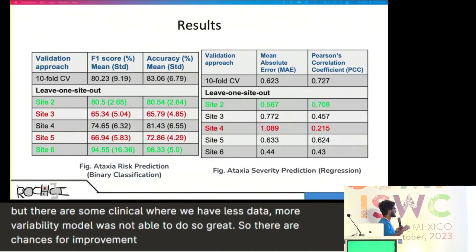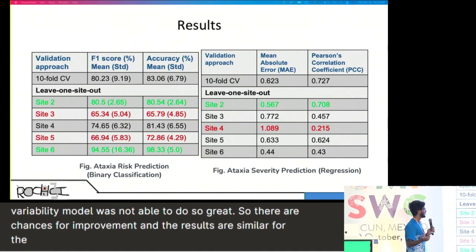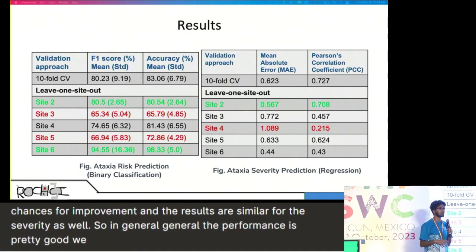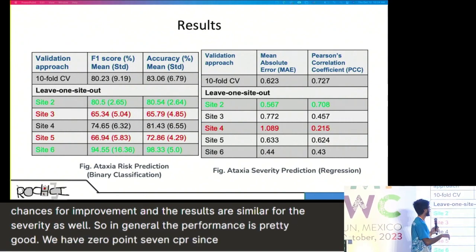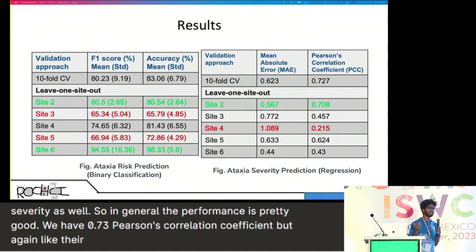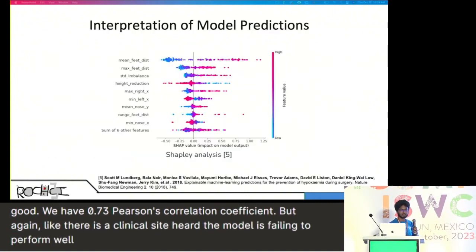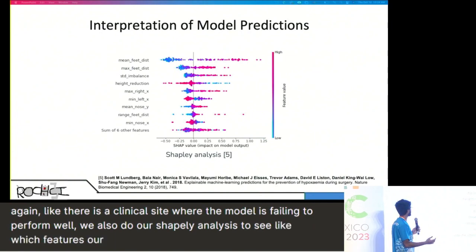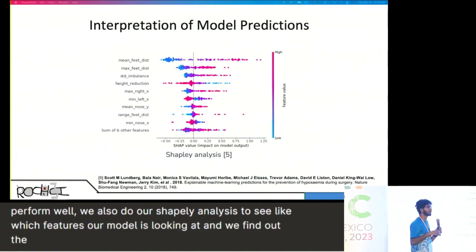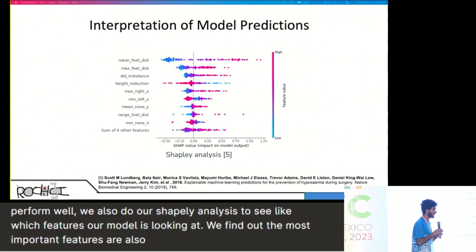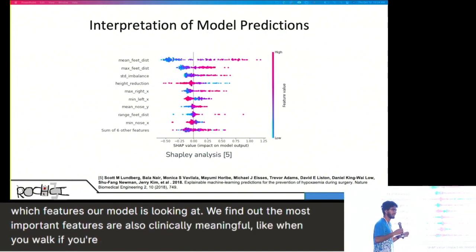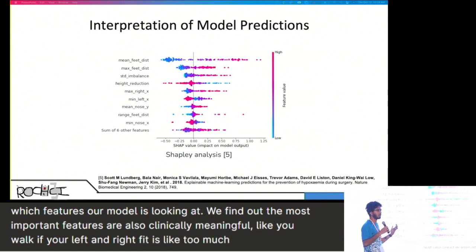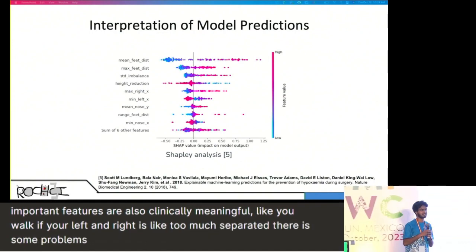The results are similar for the severity prediction as well. In general the performance is pretty good — we have a 0.73 Pearson's correlation coefficient — but again there is a clinical site where the model is failing to perform well. We also do a SHAP analysis to see which features our model is looking at, and we find that the most important features are also clinically meaningful. For example, if your left and right feet are too much separated when walking, there is some problem, and the model is identifying that.